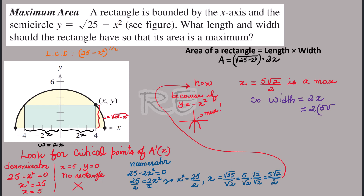The width is 2 times x. Therefore the maximum width is 2 times 5 root 2 over 2, which equals 5 root 2.